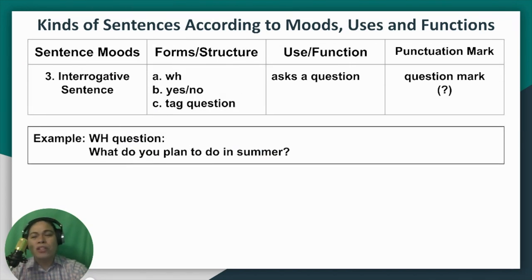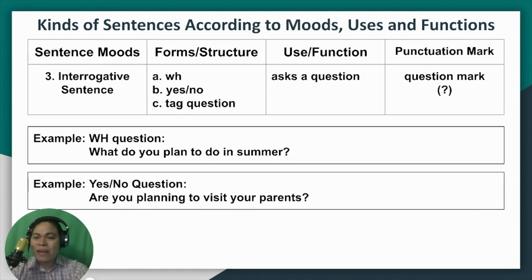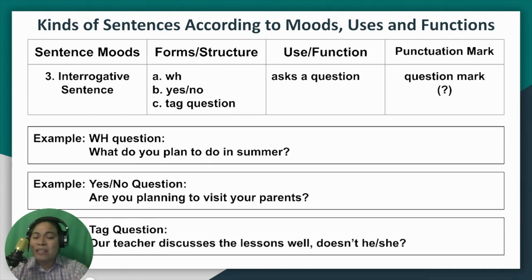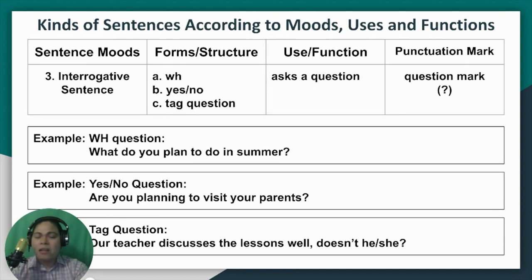Here are examples for each form. Number one, WH question: "What do you plan to do in summer?" It starts with a WH word and ends with a question mark. Number two, yes-or-no question: "Are you planning to visit your parents?" Number three, tag question: "Our teacher discusses the lesson well, doesn't he or she?" I have a separate lesson to elaborate the structure, form, functions, and formation of each. For now, we'll just use these examples.